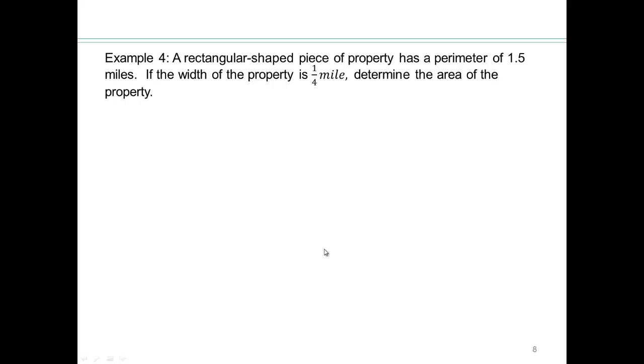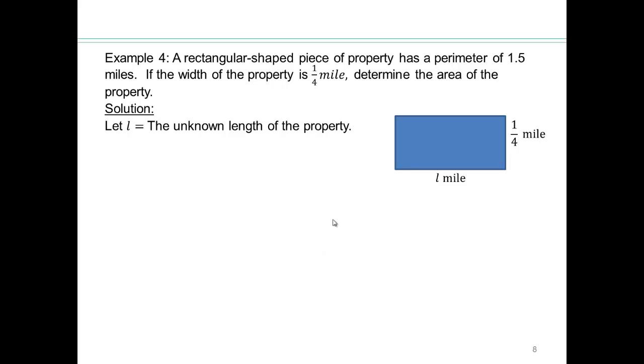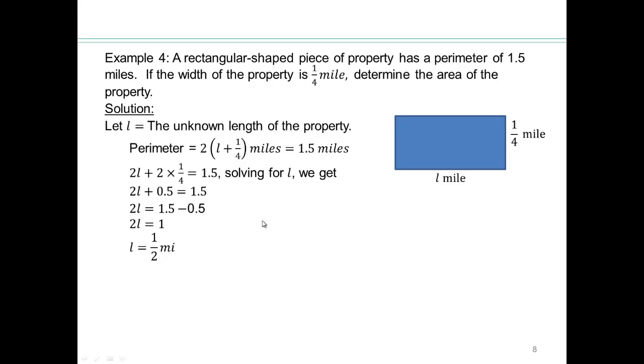Let's try this on your own. Pause the video. So draw a picture if you can, and let the unknown length of the property be determined by L. So we know that the width is a quarter mile, and let's say this length is L miles. And area of a rectangle is length times width. And the perimeter is going to be two lengths plus two widths. Perimeter is given to you as 1.5 miles. So let's solve for L. And so the length is half a mile. And so the area of the property is going to be half times a quarter, or an eighth, one-eighth square mile. You should always write your answer in words in a sentence.